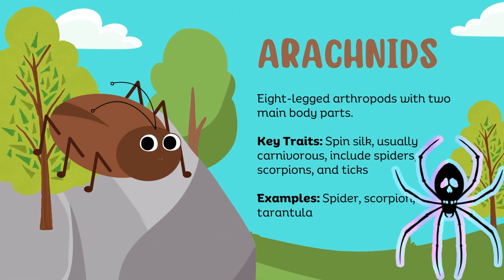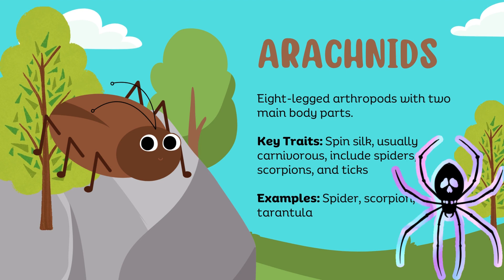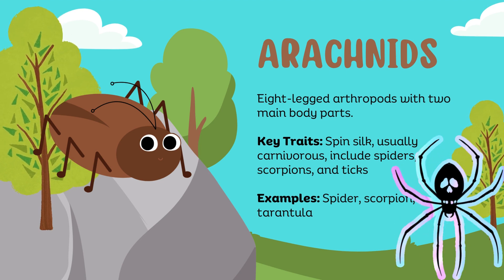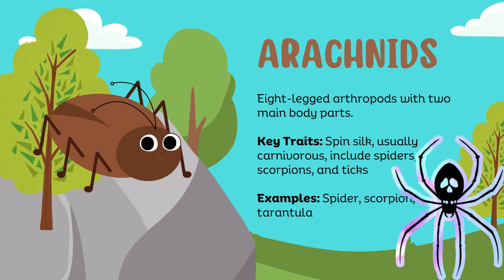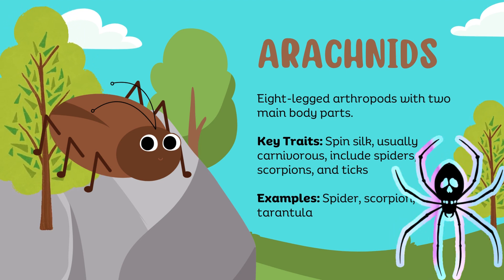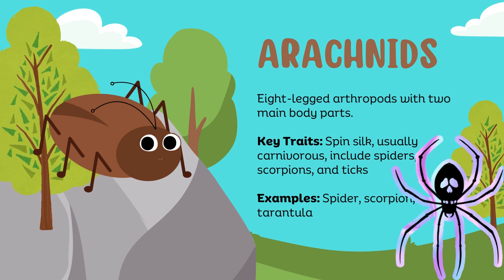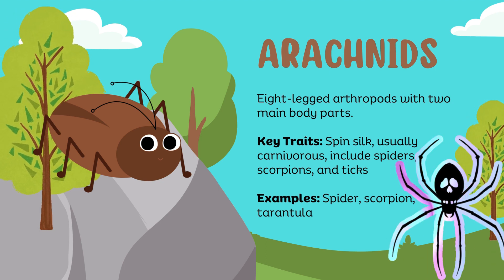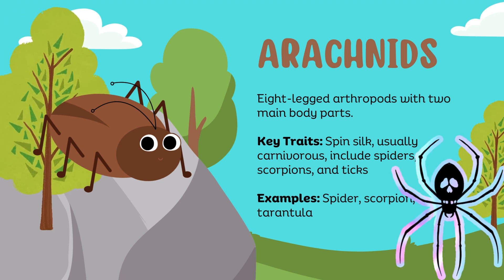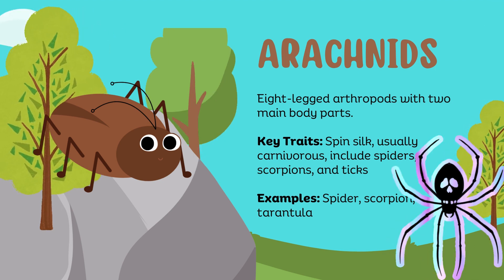Arachnids: eight-legged arthropods with two main body parts. Key traits: spin silk, usually carnivorous, includes spiders, scorpions, and ticks. Examples: spider, scorpion, tarantula.